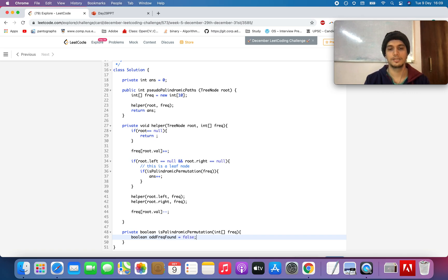It is false by default. Unless I iterate through all the elements in the frequency array, if element modulus 2 is not equal to 0, that means it's odd frequency.